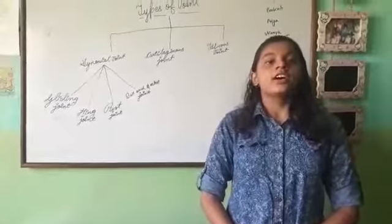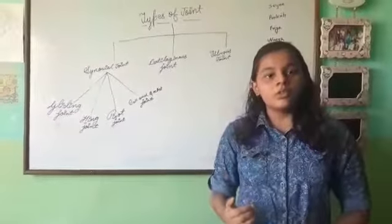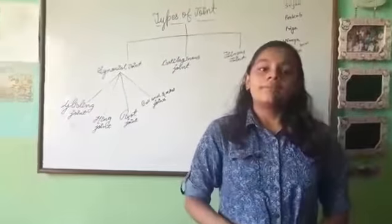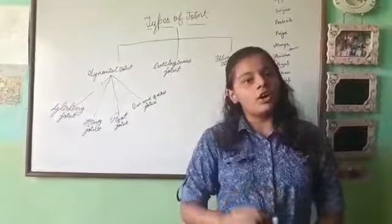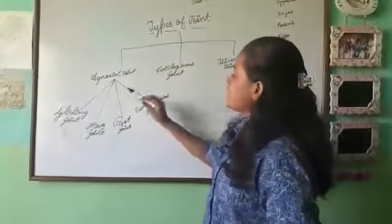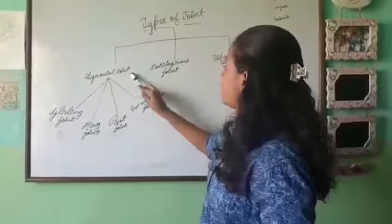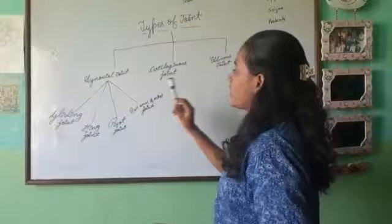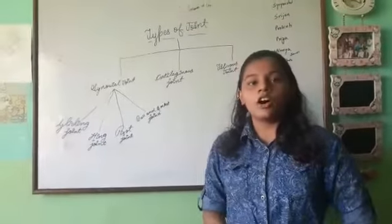And when bones get jointed, they are able to move. But have you thought that all bones move? No. Let us see the types. There are three types of joints: synovial, cartilaginous, and fibrous joint. We will see all of them closely.